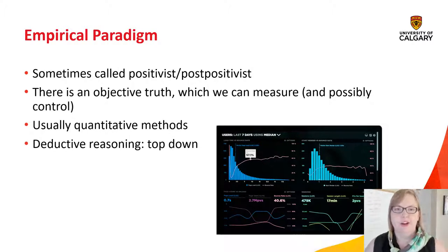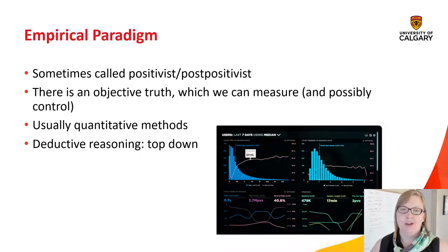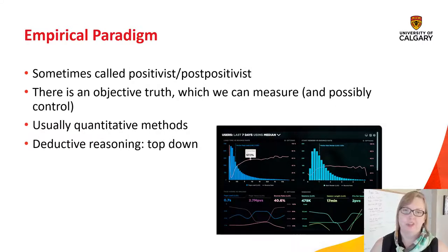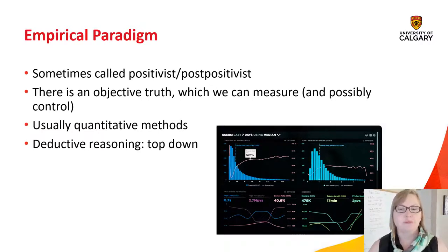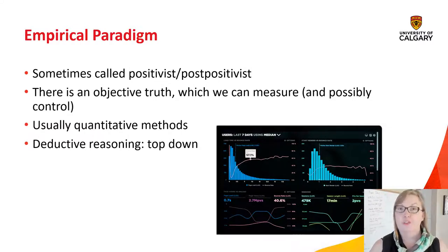The empirical paradigm is sometimes called the positivist or post-positivist paradigm. The central idea is that there is an objective truth which we can measure and possibly control in order to test hypotheses. When people are doing research in this paradigm, they assume there is a thing out there which they can test. For example, you would start with a hypothesis such as 'there is poverty in Canada' and go out looking for information to either support or refute that hypothesis.